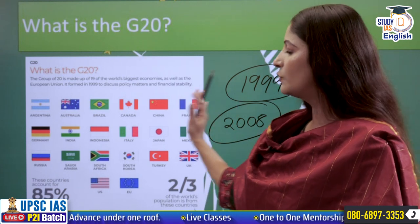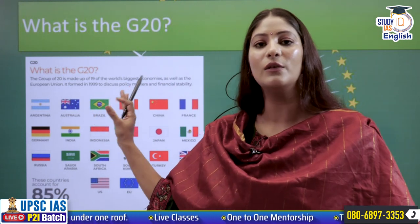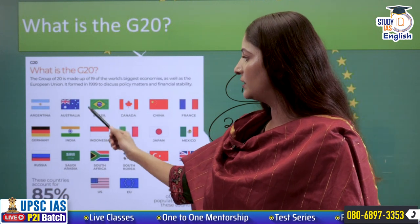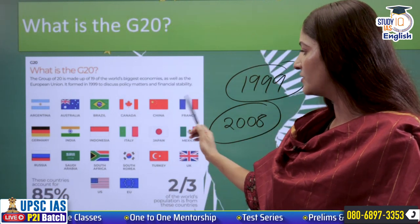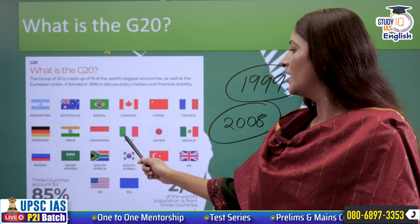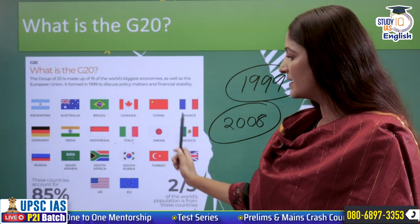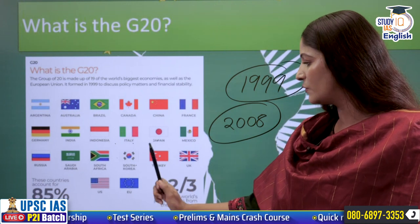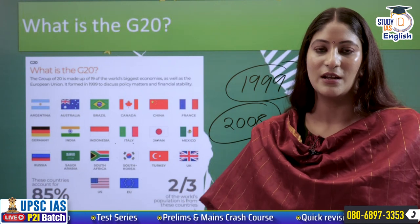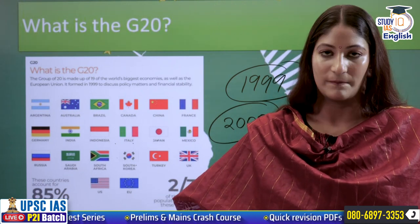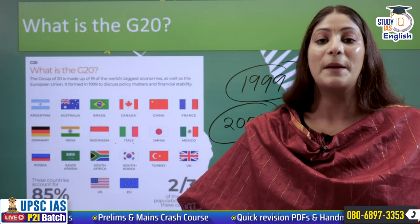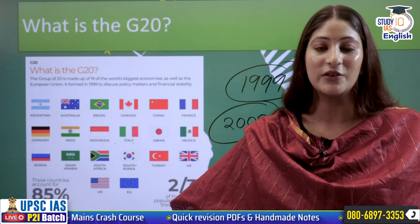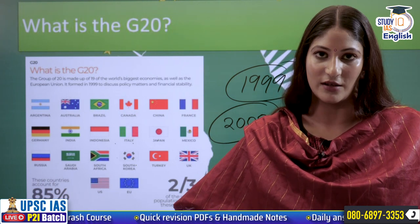The G20 consists of 19 economies and one regional grouping, the European Union: Argentina, Australia, Brazil, Canada, China, France, Germany, India, Indonesia, Italy, Japan, Mexico, Russia, Saudi Arabia, South Africa, South Korea, Turkey, UK, USA, and the EU. This grouping represents 85% of global GDP, two-thirds of the world's population, and 75% of trade. Right now India is the president. The next president will be Brazil, followed by South Africa as it is a rotating presidency.